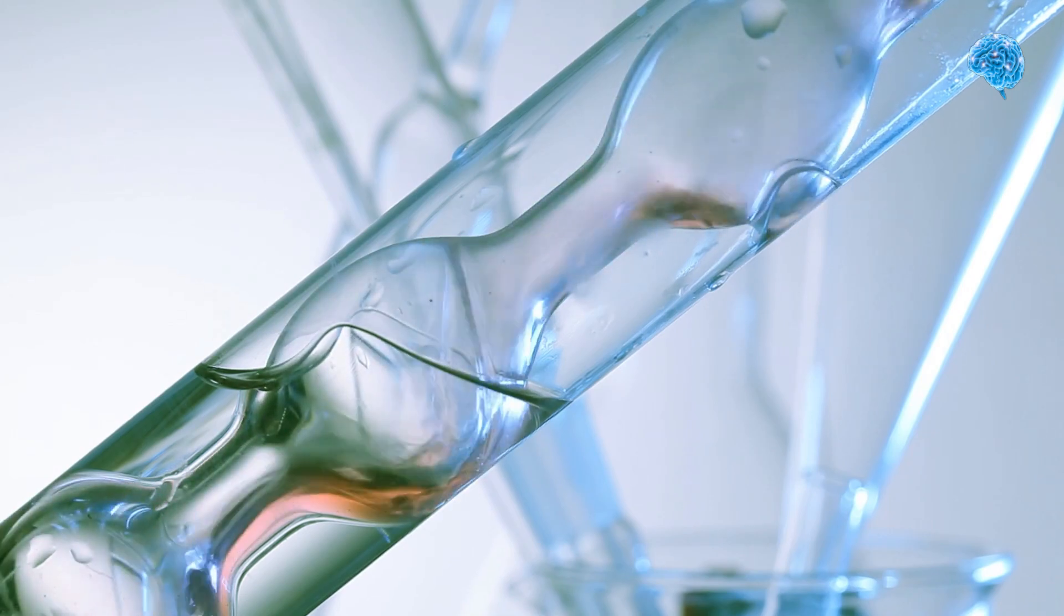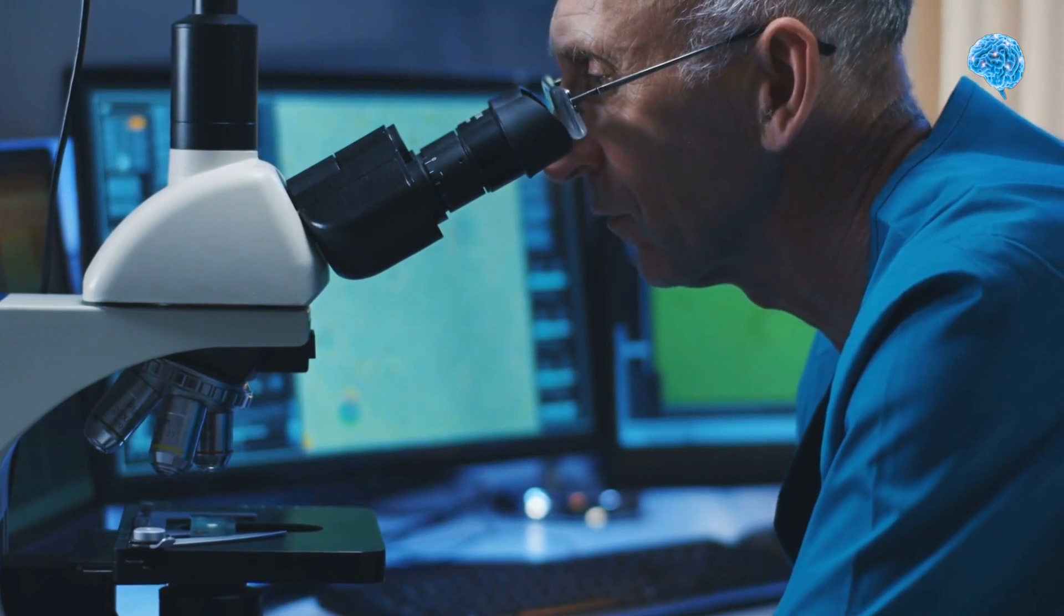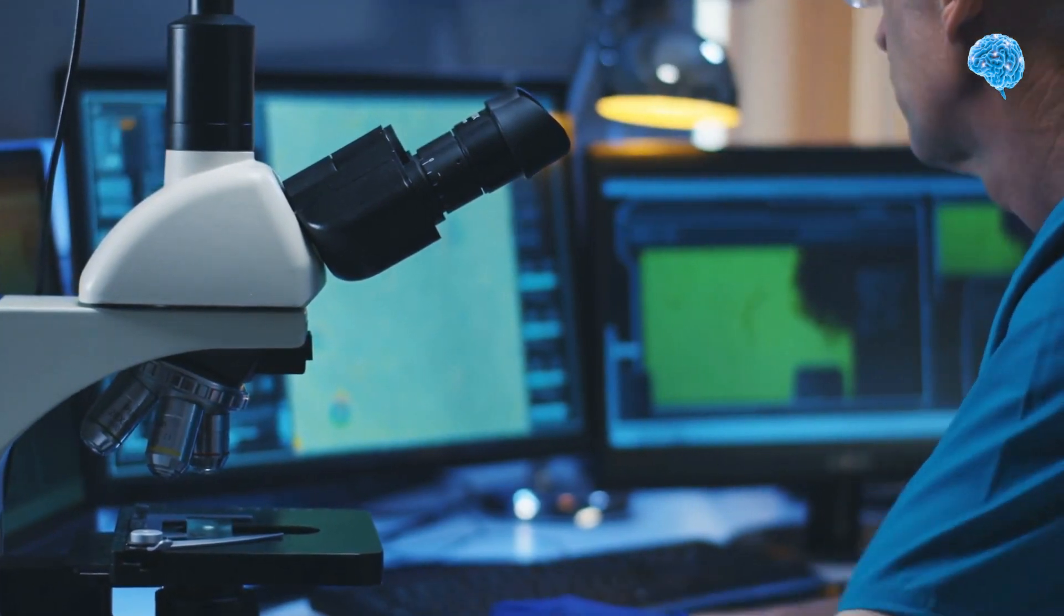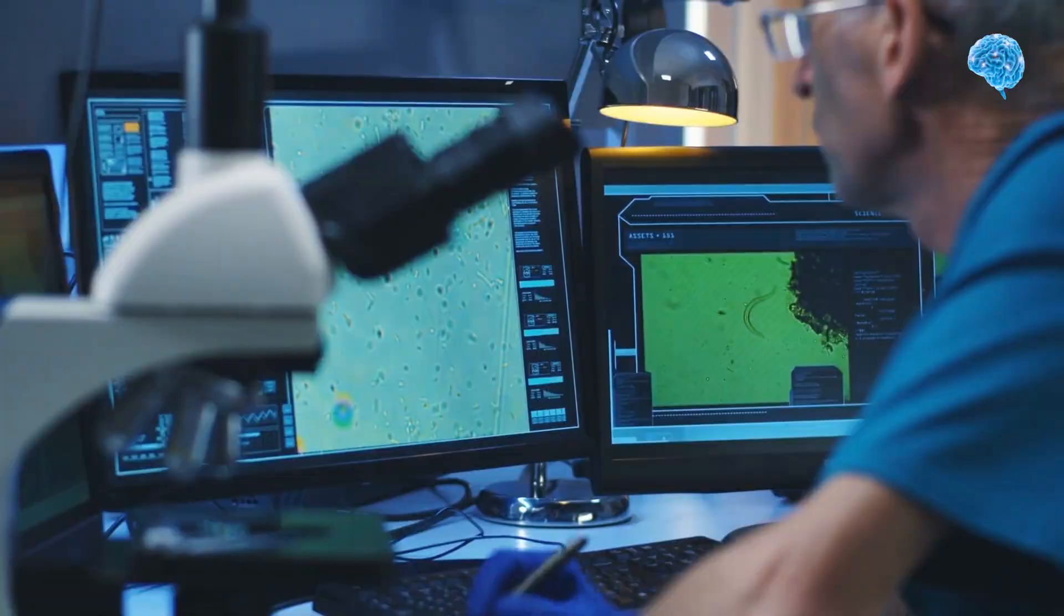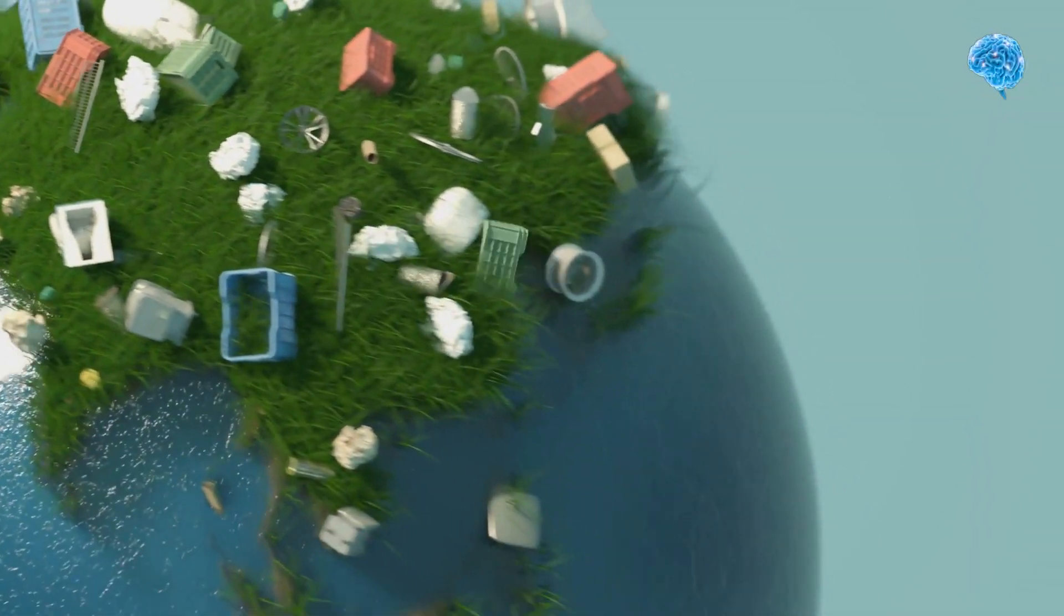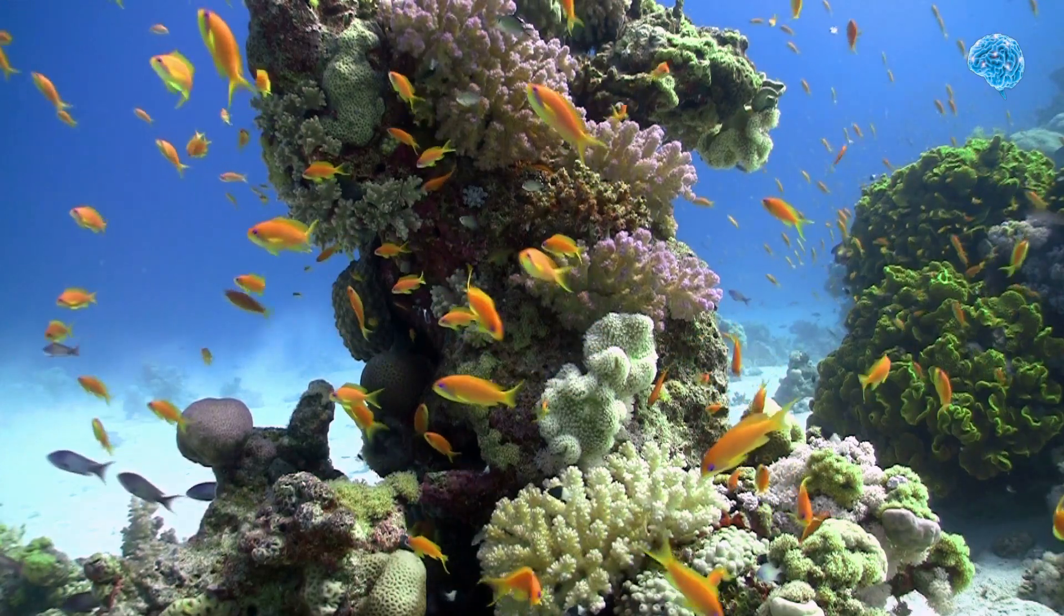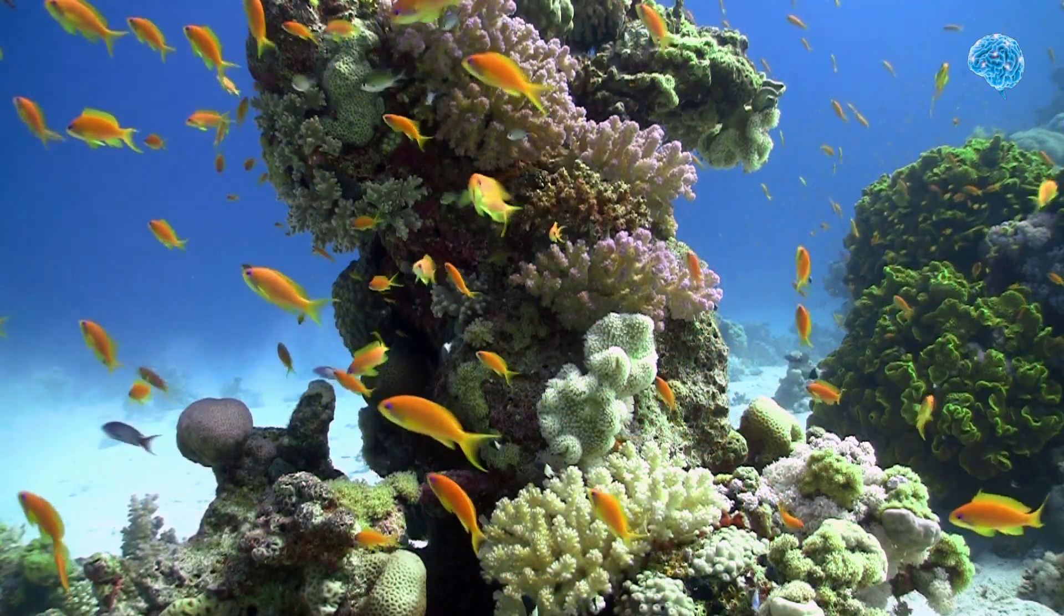This discovery might help scientists better comprehend how the planet formed since it lends credence to the theory that Earth's water came from within, rather than from asteroids and comets. I think that evidence of a whole Earth's water cycle is finally emerging, which might help explain the enormous volume of liquid water on the surface of our livable planet, Jacobson said at the time.